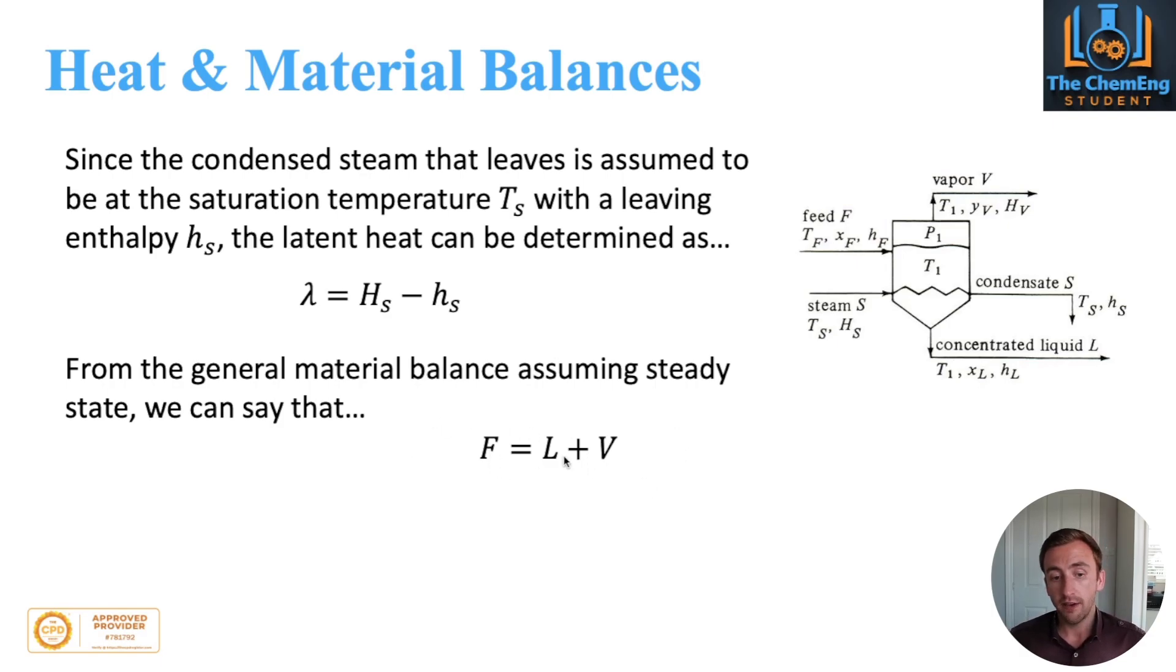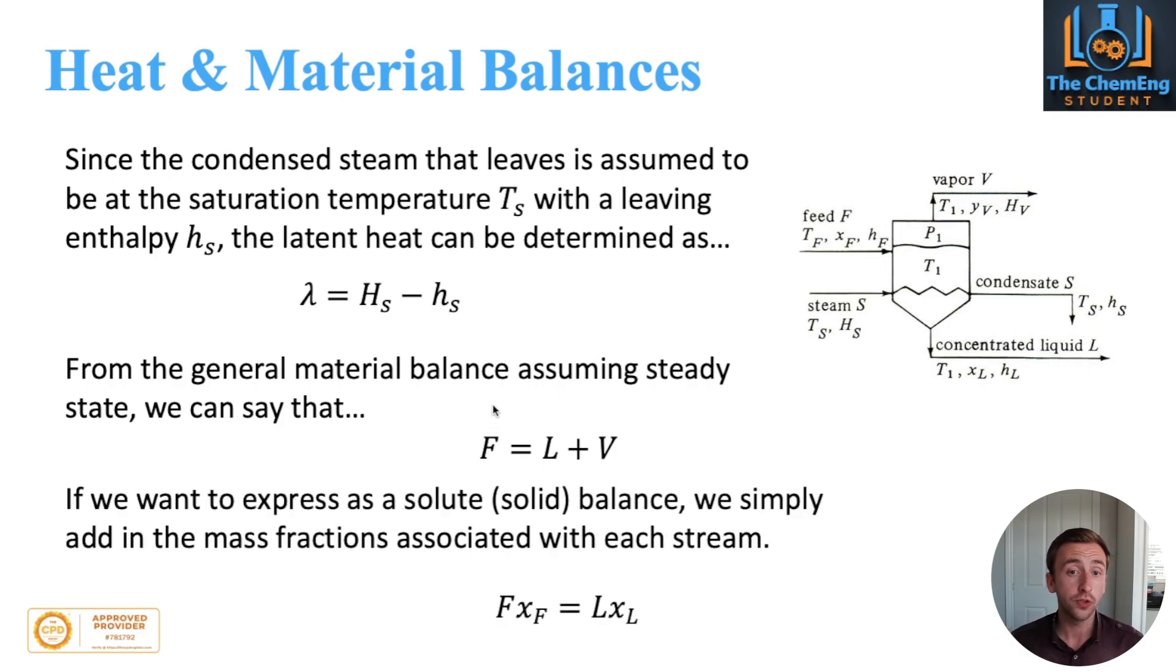If we come back to this, then we have F equals L plus V, because the feed coming in will be equal to what leaves in the vapor phase and what leaves in the concentrated liquid phase. If we want to express this as a solute balance, i.e. the solid, we simply add in the mass fractions. You might be asking where did the V go? Well, the V would be zero because we wouldn't have any solids in the vapor phase. The vapor phase we assume is going to be 100% solute-free, i.e. there's no solids. That's why we can neglect the V term.